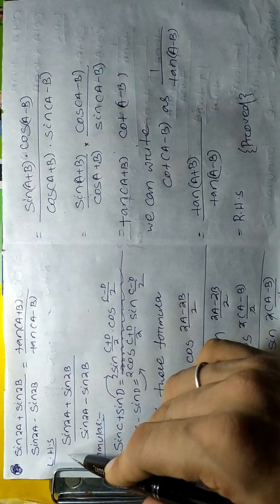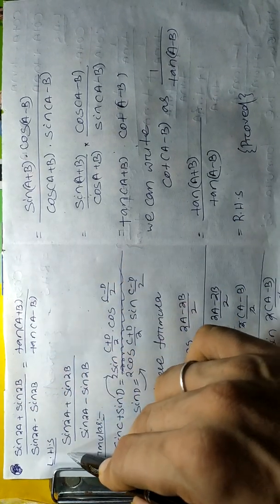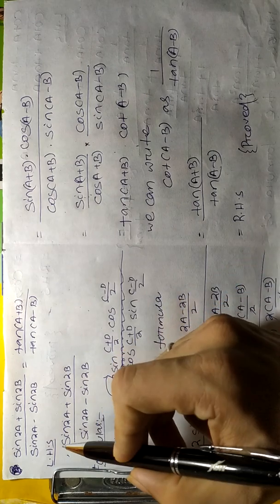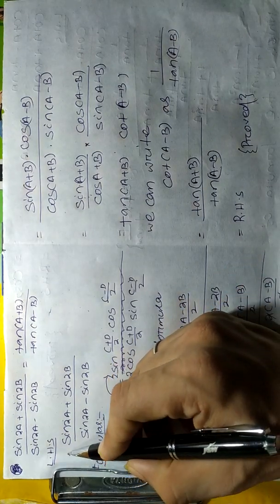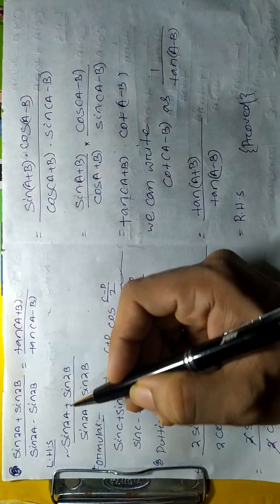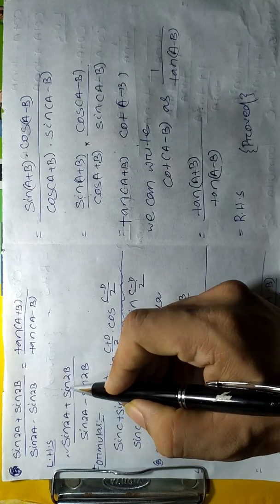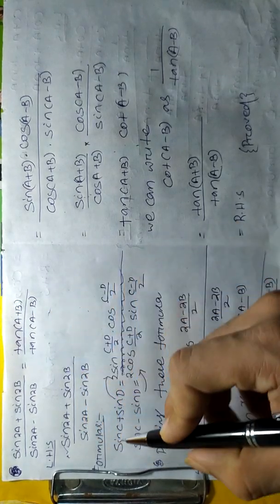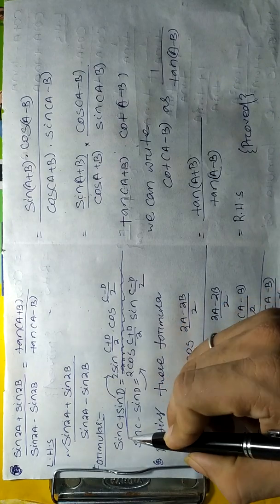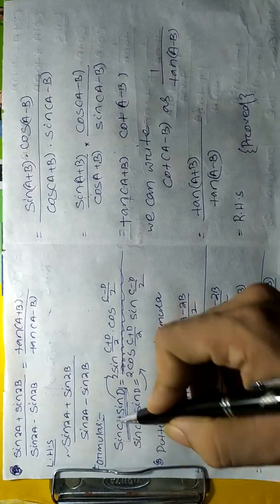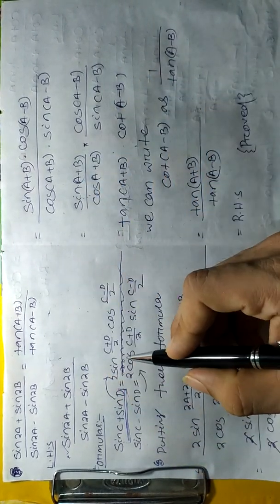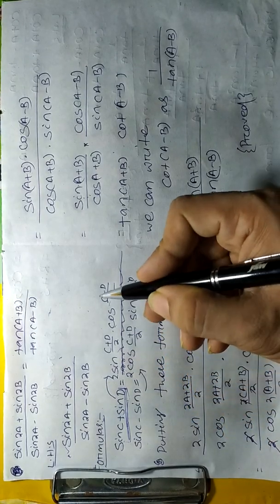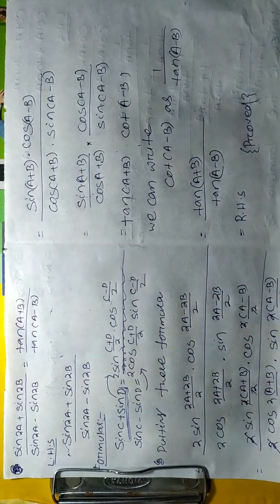To prove this problem we have to take LHS first. In the numerator, sine 2A plus sine 2B is in the form of sine C plus sine D. So we have to apply this formula: 2 sine((C+D)/2) into cos((C−D)/2).